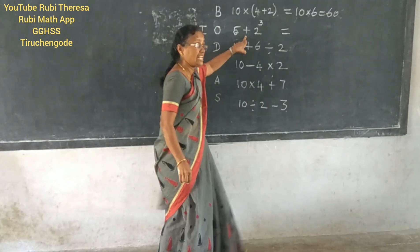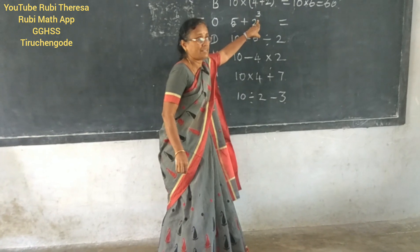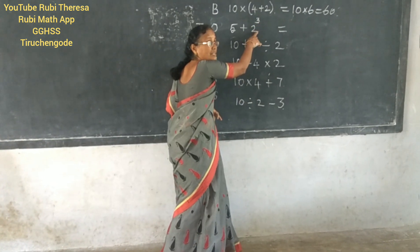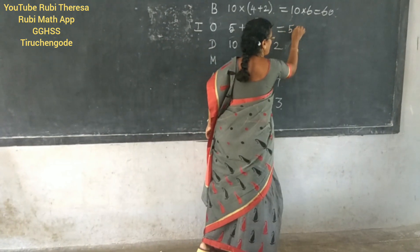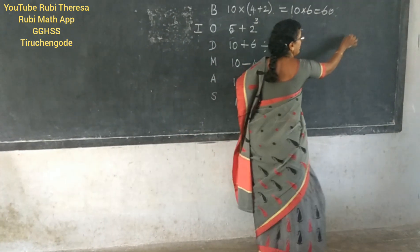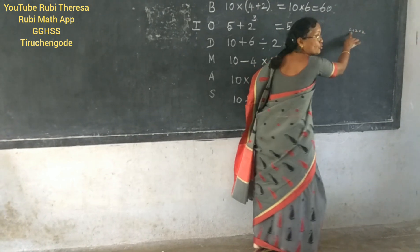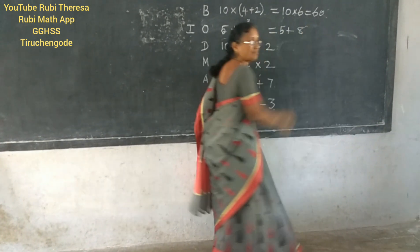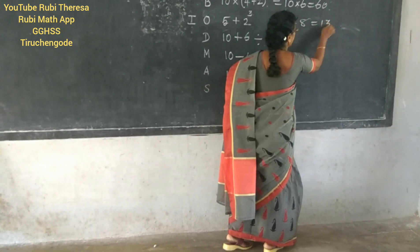Here addition and power — so which one should be done first? Power. So 5 plus 2 cube. That means what? 2 into 2 into 2. 2 twos are 4, 4 twos are 8. So 5 plus 8 is 13.